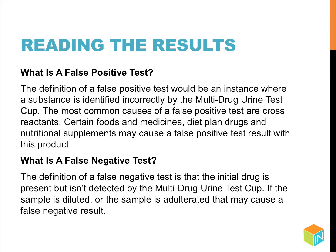A false positive test occurs when a substance is identified incorrectly by the multi-drug urine test cup. The most common causes are cross-reactants: certain foods, medications, diet plan drugs, and nutritional supplements may cause a false positive result. A false negative test means the drug is present but isn't detected by the multi-drug urine test cup. If the sample is diluted or adulterated, that may cause a false negative result.